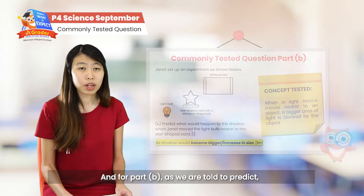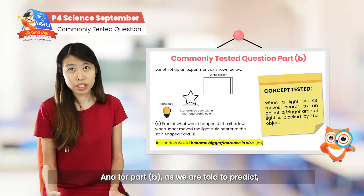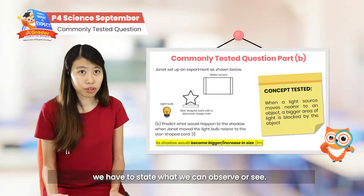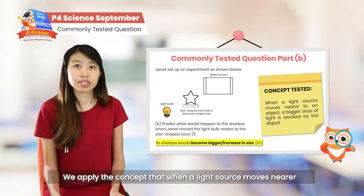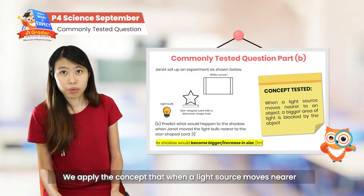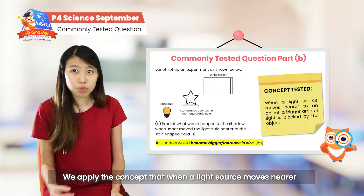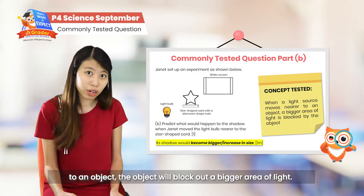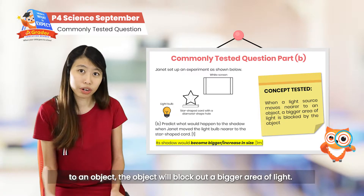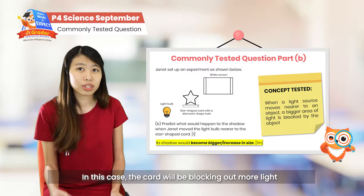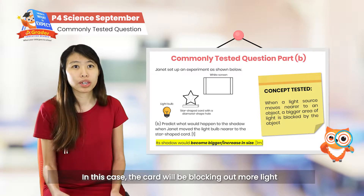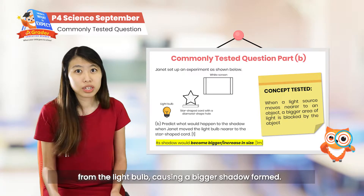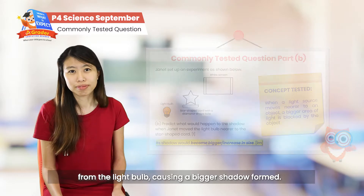For part B, as we are asked to predict, we have to state what we can observe or see. By applying the concept that when a light source moves nearer to an object, the object will block out a bigger area of light. So in this case, the card will be blocking more light from the light bulb, causing the shadow formed to be bigger.